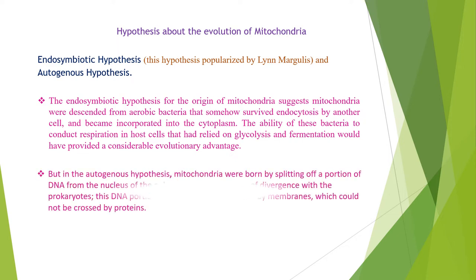In the autogenous hypothesis, mitochondria were born by splitting off a portion of DNA from the nucleus of the eukaryotic cell at the time of divergence with the prokaryotes. This DNA portion would have been enclosed by membranes which could not be crossed by proteins. Since mitochondria have many features in common with bacteria, the endosymbiotic hypothesis is the more widely accepted of the two accounts.